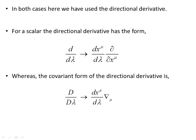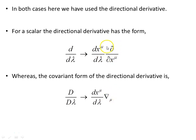Throughout this video we've made use of the directional derivative. For a scalar, the directional derivative has the form d/d_lambda = dx^mu/d_lambda times ∂/∂x^mu. The covariant form of the directional derivative is capital D / capital D_lambda, which involves the covariant derivative. For scalar functions this is a partial derivative, but for vectors and tensors we need the covariant derivative. And that is it.